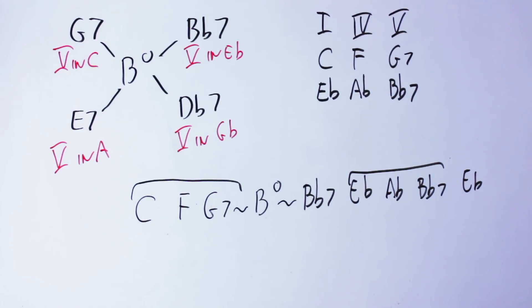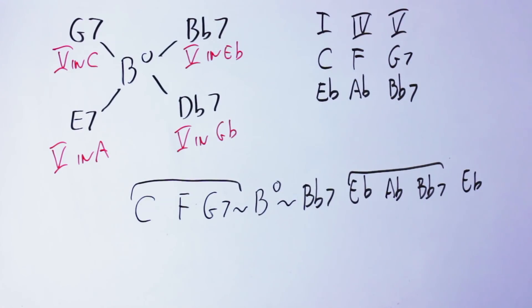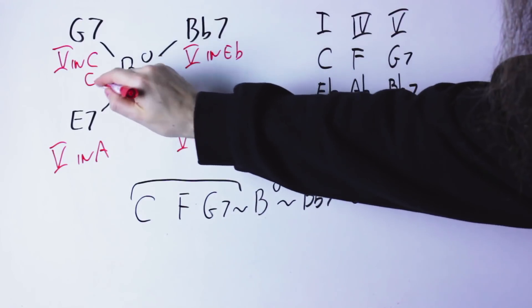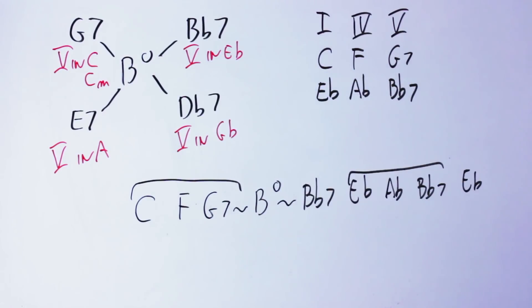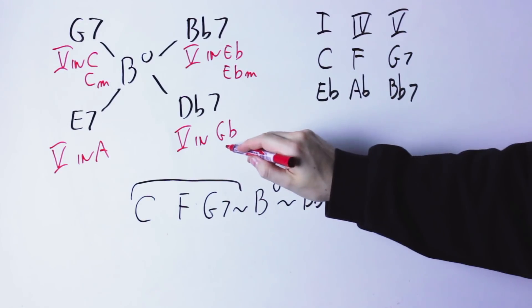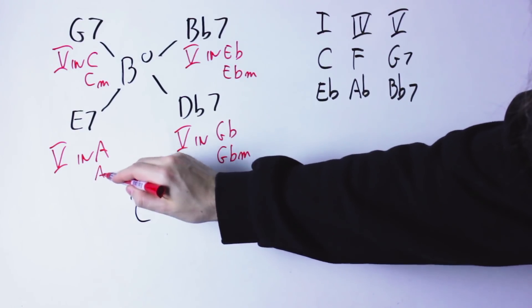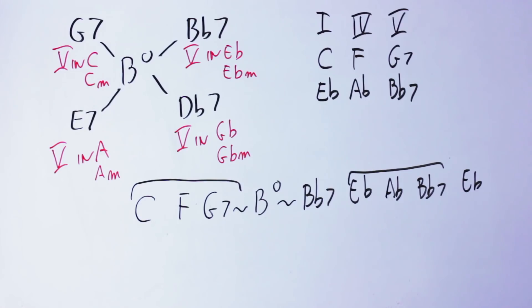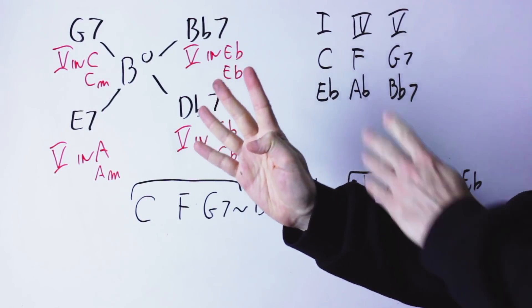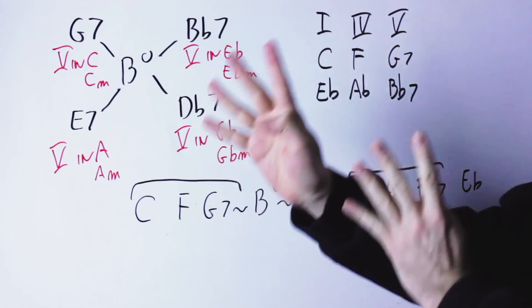So far I've worked only with major keys, but the interesting thing here is that G7 is not just the fifth chord in the key of C — it's also the fifth chord in the key of C minor, and the same for all the others. B flat 7 is also the fifth chord in the key of E flat minor, D flat 7 is also the fifth chord in the key of G flat minor, and E7 is also the fifth chord in the key of A minor. So this B diminished chord connects not only four major keys but also four minor keys — in fact it connects all eight of those keys together.